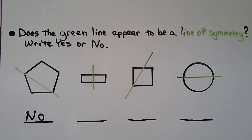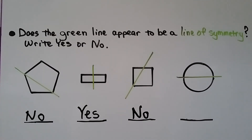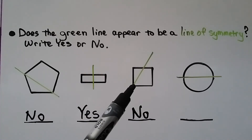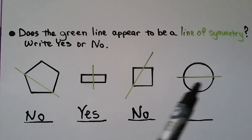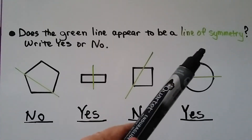If you said yes, you're right — we could fold it on that line and both sides would match. What about this line — is it a line of symmetry for this square? If you said no, you're right. We wouldn't be able to make an exact match folded on that line. Now look at this circle — does that appear to be a line of symmetry? If we folded it on that line, would both sides match? If you said yes, you're right. A circle, because it's perfectly round, actually has many many lines of symmetry — we could just keep drawing lines to divide it in half.